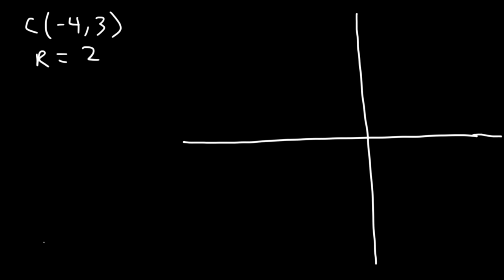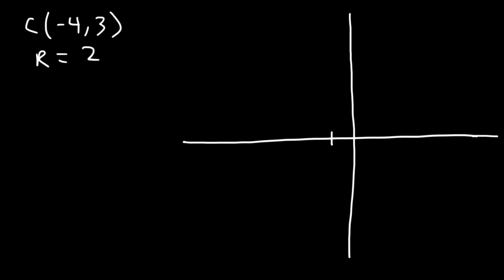Now let's graph it. Most of the circle will be on the left side since the center is (negative 4, positive 3). We plot the center there, then go up 2 units to the point (negative 4, 5), down 2 units, 2 to the right, and 2 to the left. My circles are not the best, but that's pretty much what it looks like.